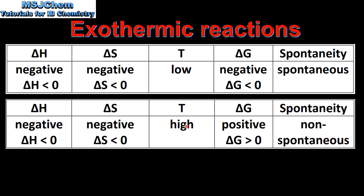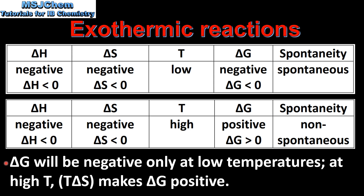If the temperature is high then delta G will be positive and the reaction will be non-spontaneous. So delta G will be negative only at low temperatures. At high temperature the product of the temperature times the change in entropy, which is negative, makes delta G positive and therefore non-spontaneous.